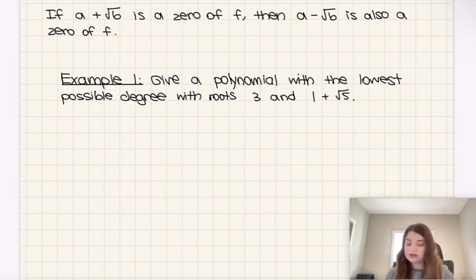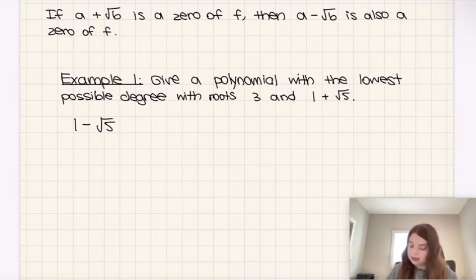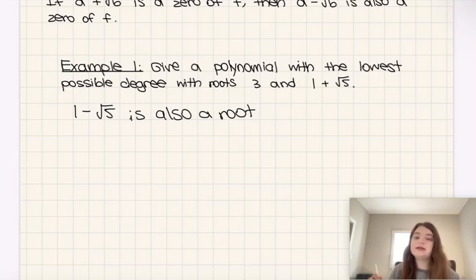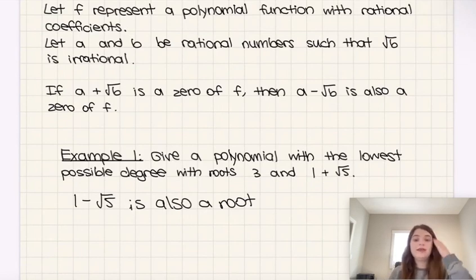Well, since 1 plus root 5 is a zero of f, our polynomial, that means 1 minus root 5 is also a root. And keep in mind that we don't have to do this with 3 because 3 is not irrational. It doesn't fit this format, the a plus root b, because it says specifically here that root b must be irrational, and so that eliminates root 3 as being a part of this.